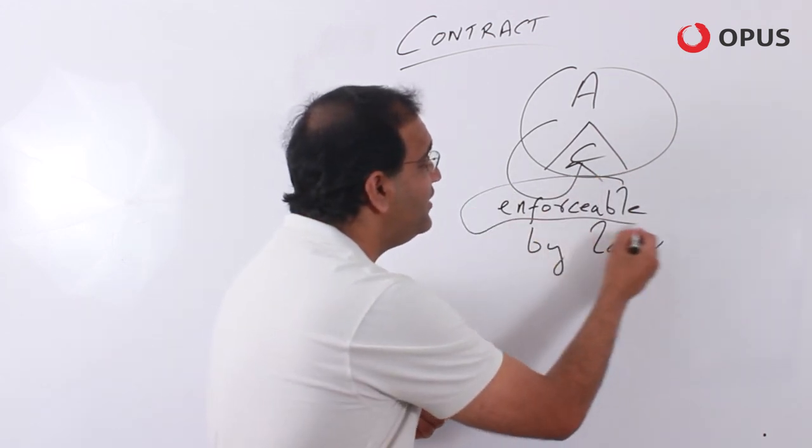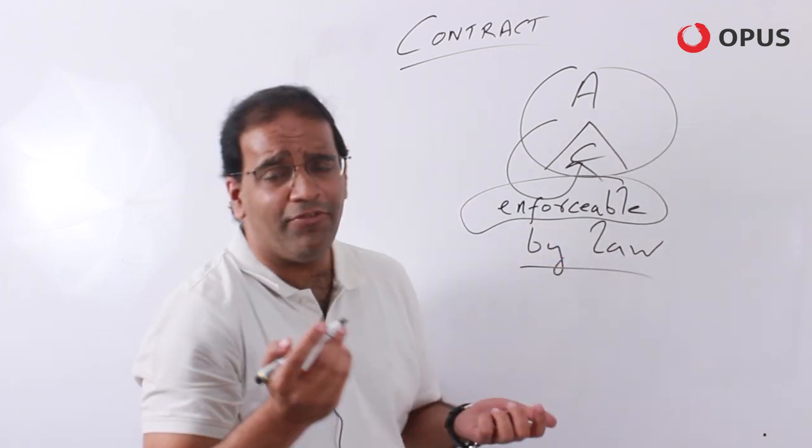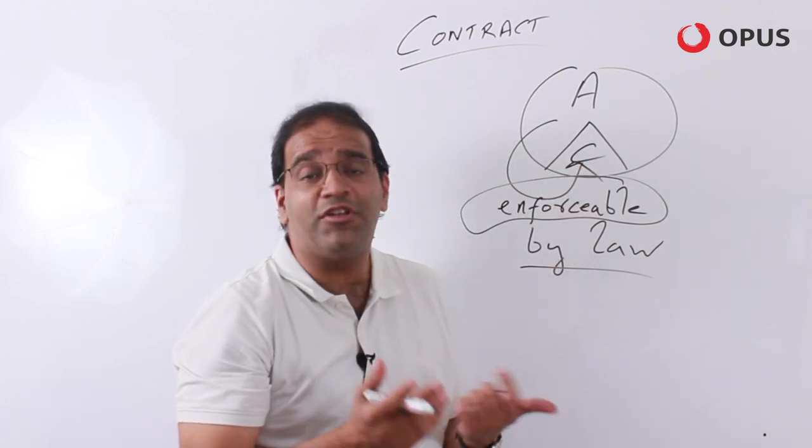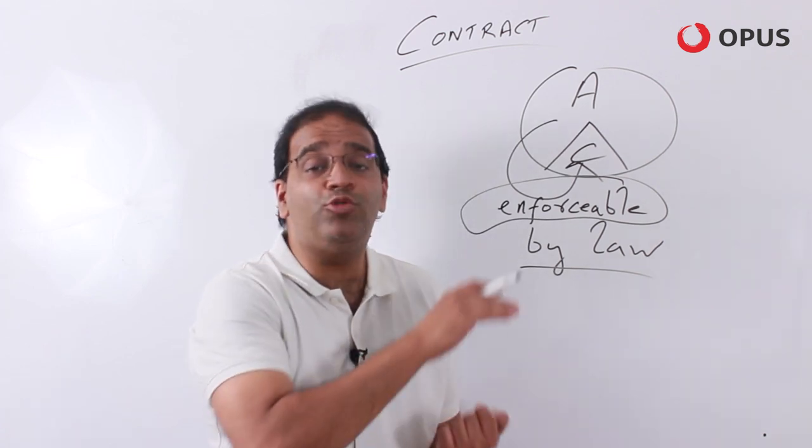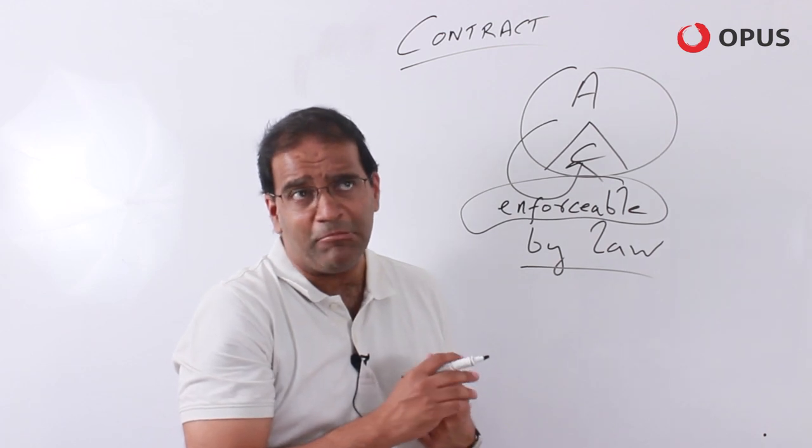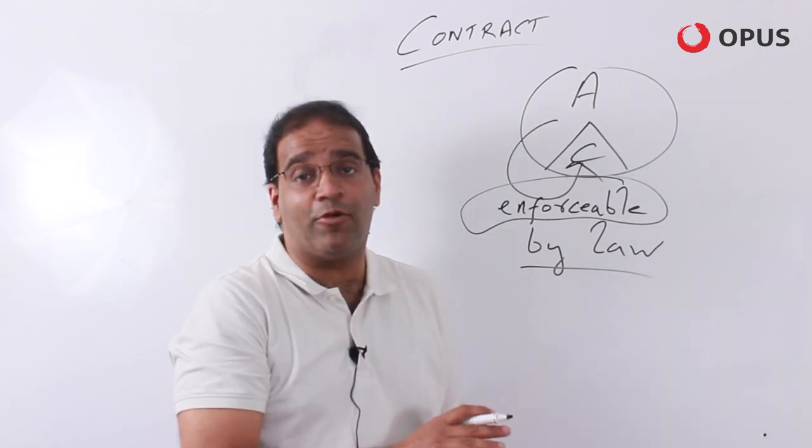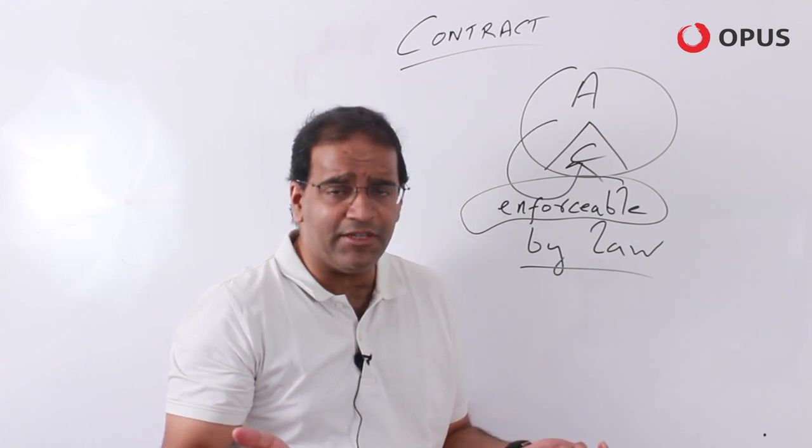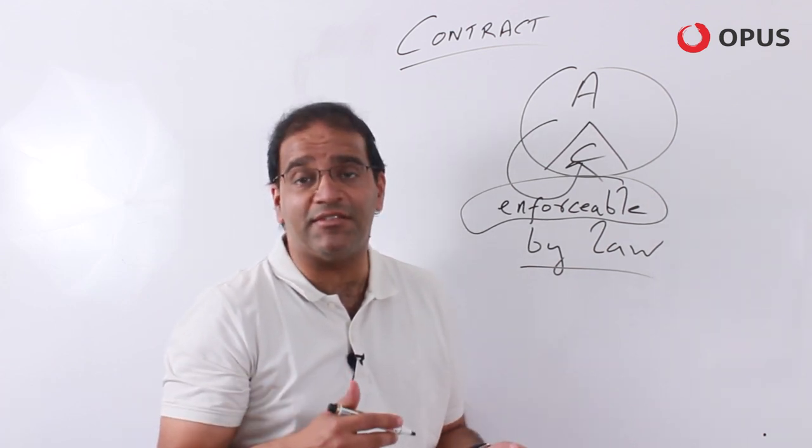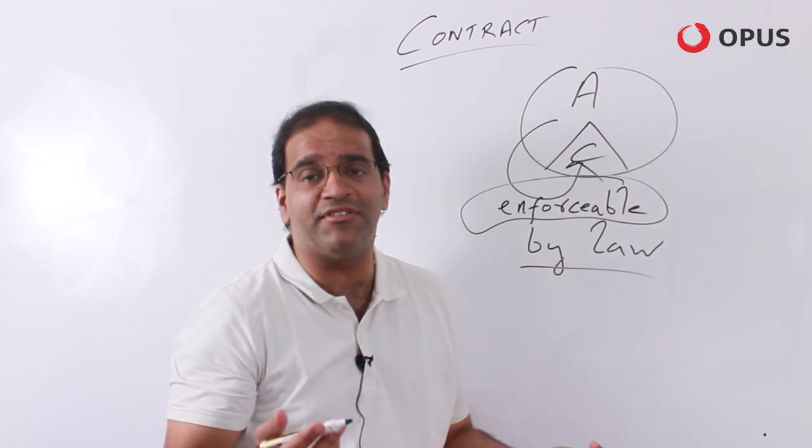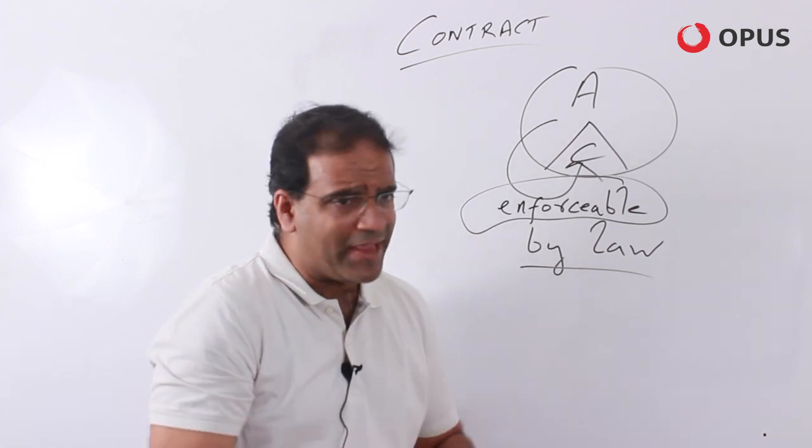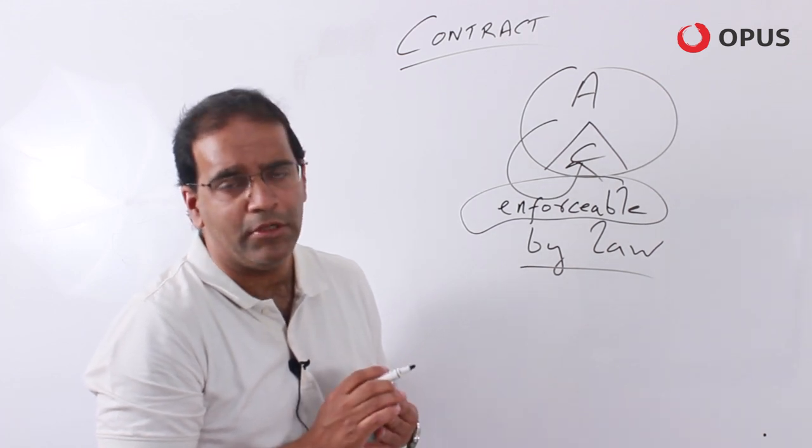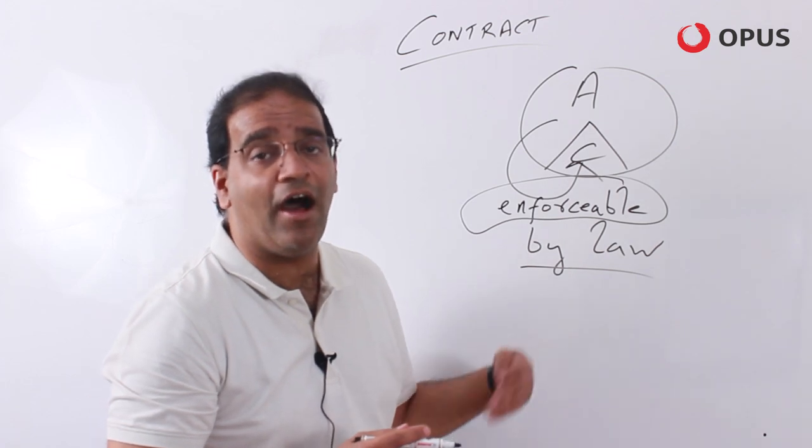So what do we mean when I say something is enforceable by law? Enforceable by law essentially means that if one of the parties to this particular contract does not do what he or she was supposed to do, then the other party can sue the person and seek enforcement of the contract in either of two ways: either making the court pass an order directing the person who's in breach of contract to do what he's supposed to do, or in the alternative, some compensation must be paid by the person who has breached the contract to the person who is suffering some loss as a consequence of that breach.